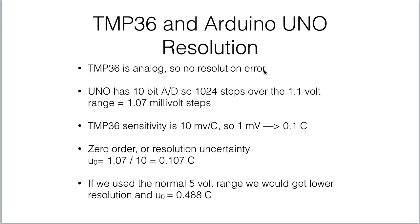The TMP36 is analog, so it doesn't have a resolution error. The Uno is a 10-bit ADC with 1,024 steps over the 1.1-volt range — a little more than 1-millivolt steps. The TMP36 sensitivity is 10 millivolts per degree C, so that 1-millivolt step translates into a 0.1°C uncertainty due to resolution. So our zero-order resolution uncertainty is about 0.1°C. Had we used the 5-volt range instead of 1.1 volts, we'd have a lower resolution and an uncertainty closer to half a degree Celsius.